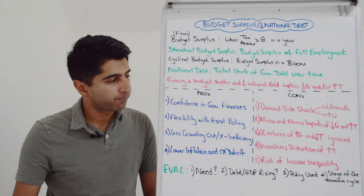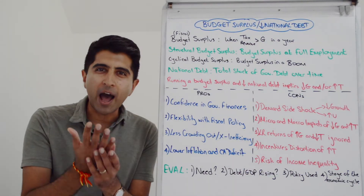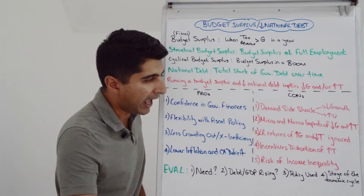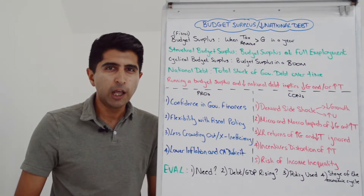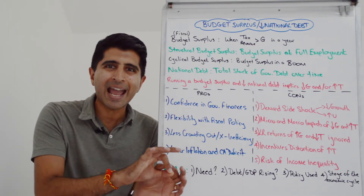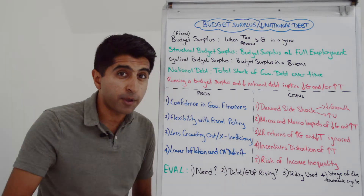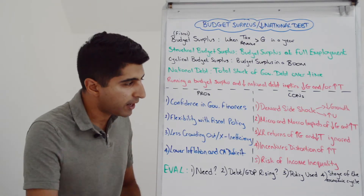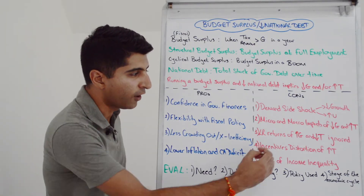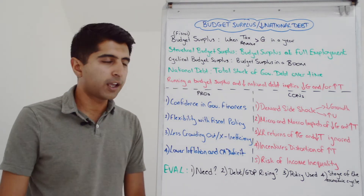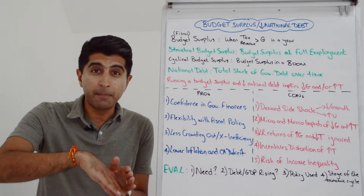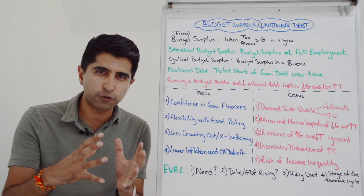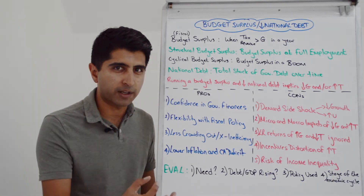Lastly on the cons side, we can worry about the incentive distortions of higher direct taxation. On income tax, we can bring in Laffer curve concerns: there is a lower incentive to work, a lower incentive for economically inactive people to join the workforce, a lower incentive to be entrepreneurial, a greater incentive for emigration, and a greater incentive for tax evasion and avoidance. All of that can harm tax revenues coming in — Laffer would argue it might even mean lower tax revenues — and also constrains LRAS and productivity.